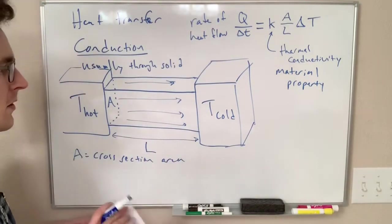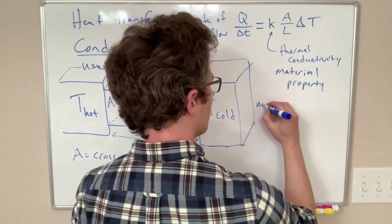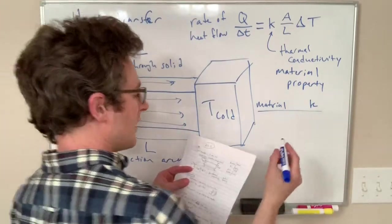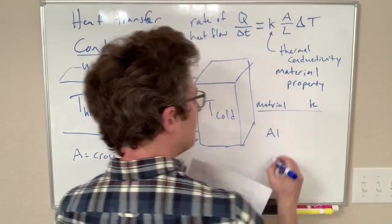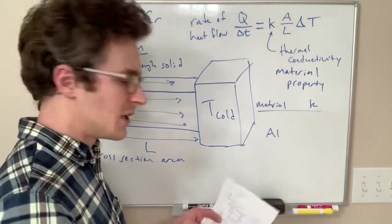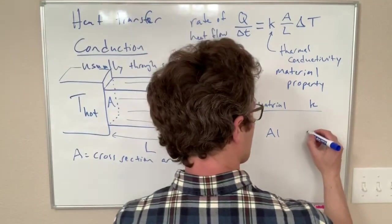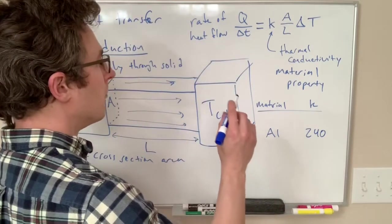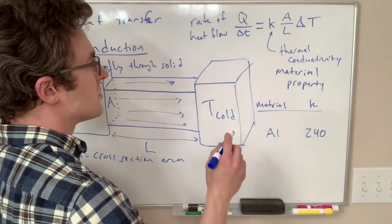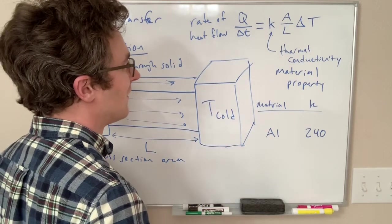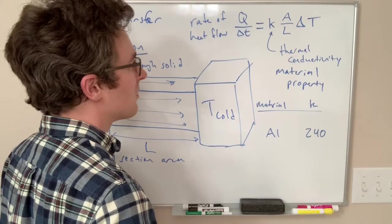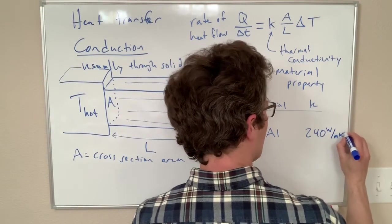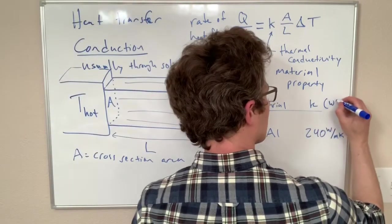So some values of k—I'll write a little table just with a range of values. So aluminum, a metal that conducts heat okay, it has a k of 240. And this has units of watts per meter kelvin. I hope that's right. We'll say all these k's are in watts per meter kelvin. If I'm not remembering those units right, I will correct myself somehow later.